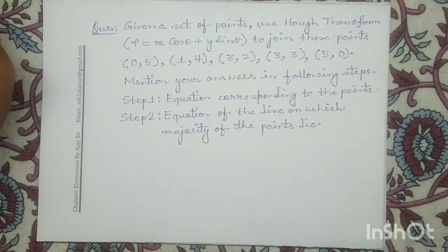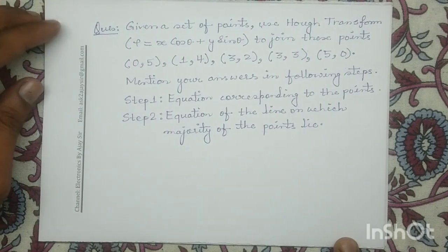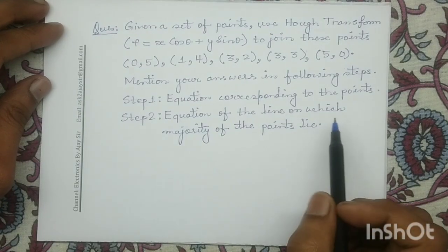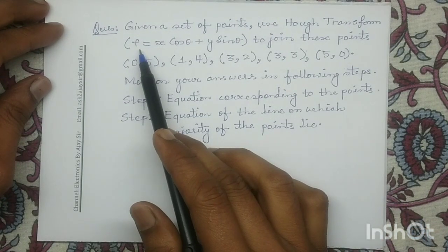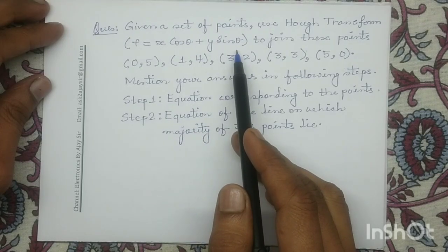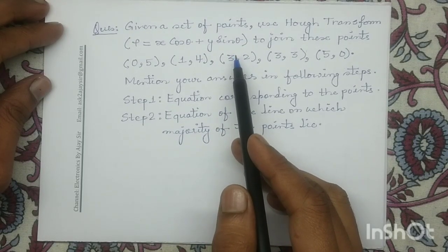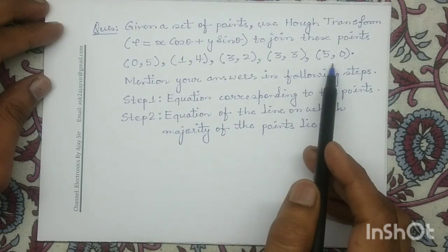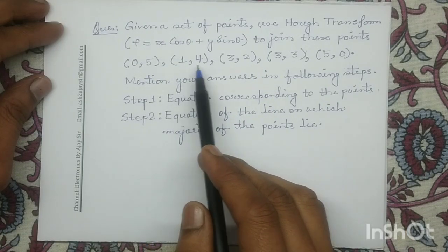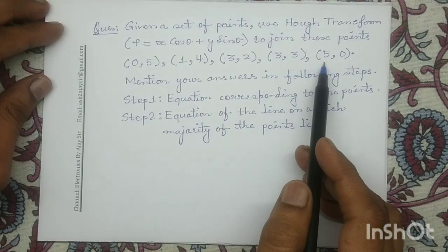Good morning all. Today we will solve another numerical question on Hough transformation. In this question we will use the equation ρ = x·cos(θ) + y·sin(θ) in order to determine the equation of line for the given set of points: (0,5), (1,4), (3,2), (3,3), and (5,0).